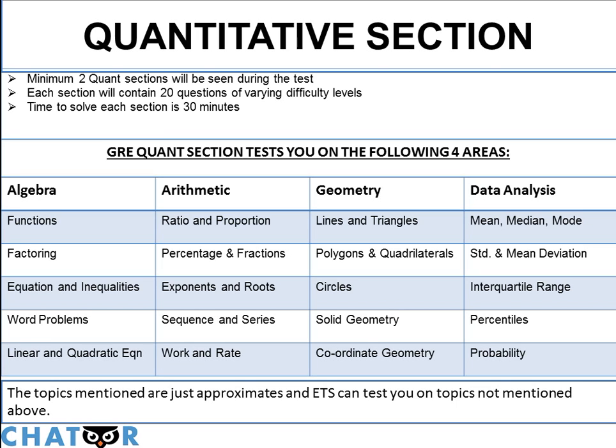Now each of these sections will contain 20 questions of varying difficulty levels. Some might be medium hard, some might be very hard, some might be extremely hard, some might be easy. So each section will have a mixture of 20 questions from different topics and different difficulty levels. The time to solve these questions is 30 minutes.